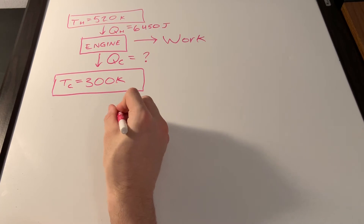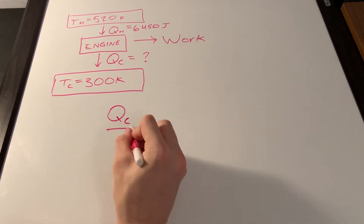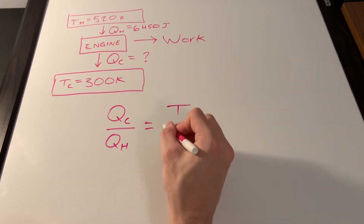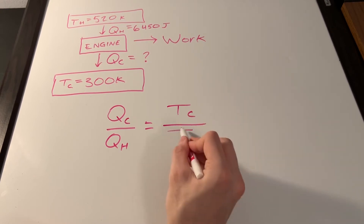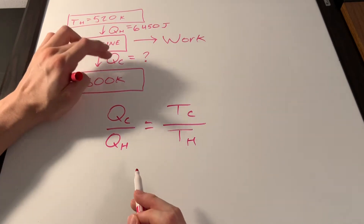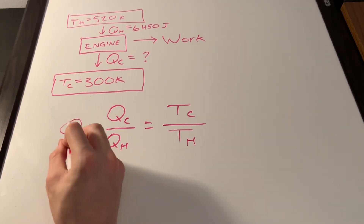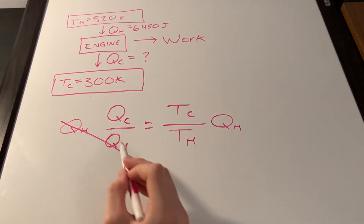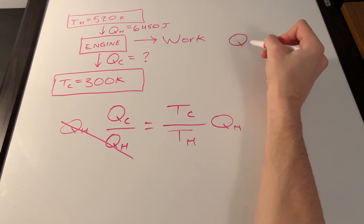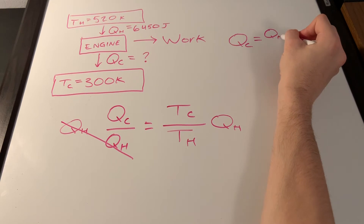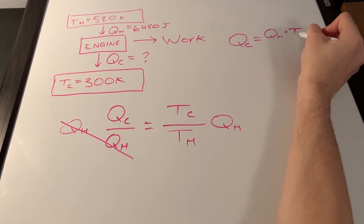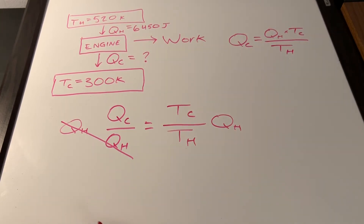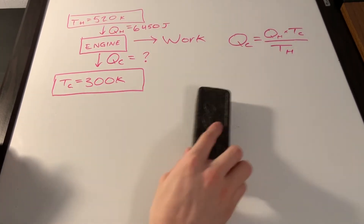We use the formula: Q sub c divided by Q sub h equals T sub c divided by T sub h — the temperature at the colder reservoir divided by the temperature at the hotter reservoir. To find Q sub c, we multiply both sides by Q sub h, giving us Q sub c equals Q sub h times T sub c divided by T sub h.